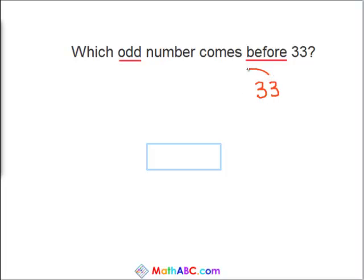Let's subtract 1. If we subtract 1 from 33, we get 32. And 32, as you can see, ends with a 2, so it's divisible by 2, and it's an even number.